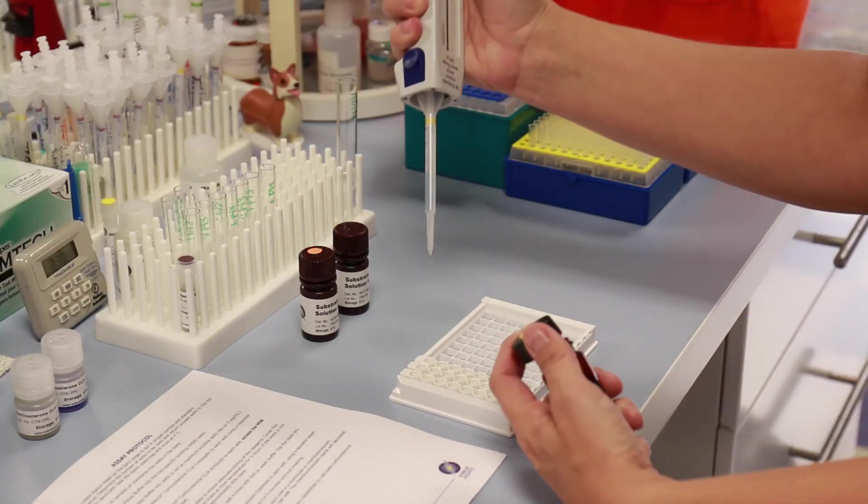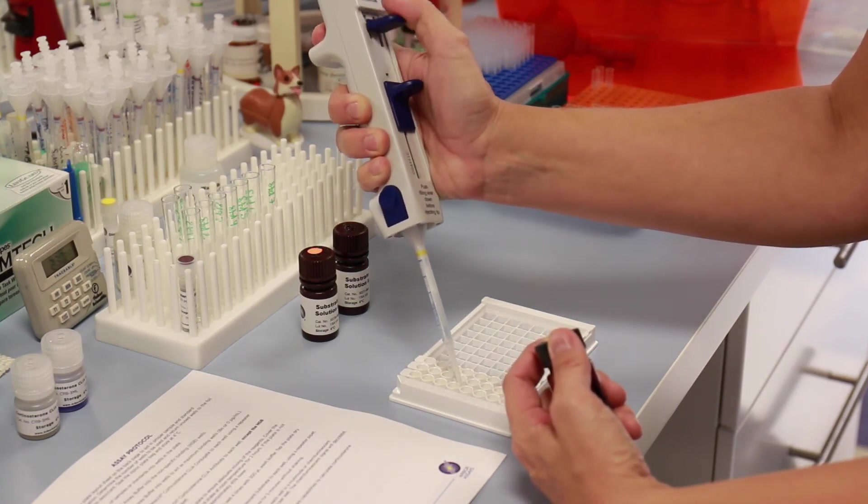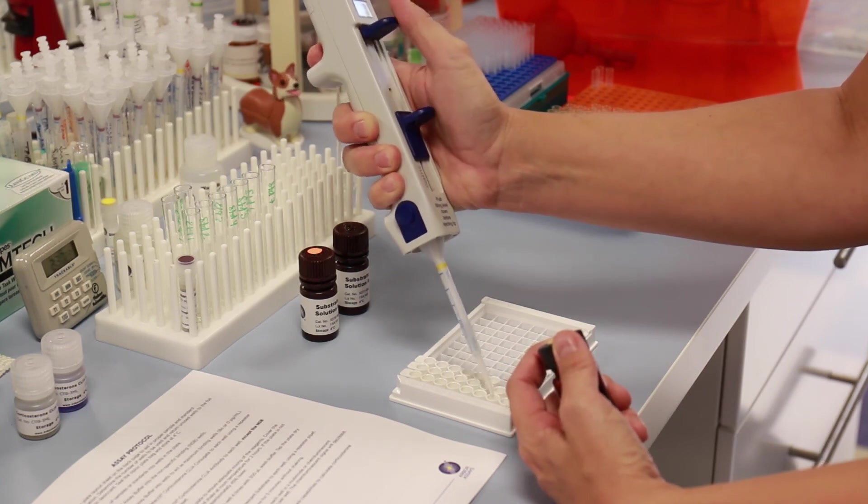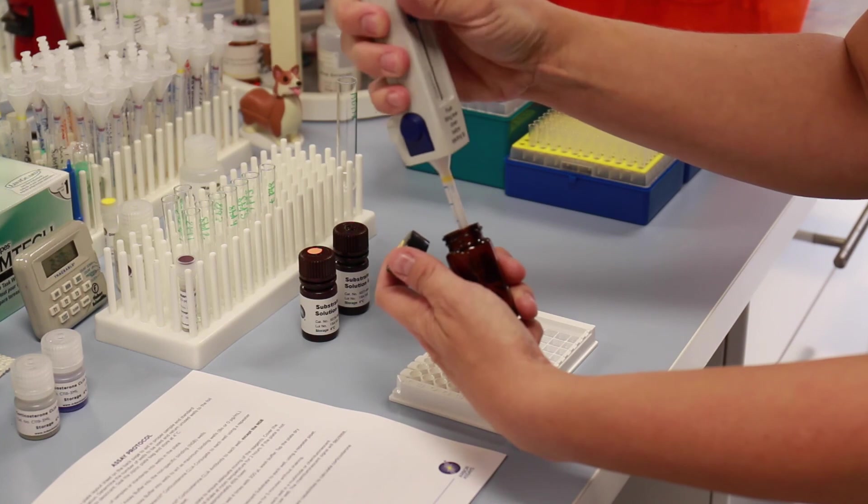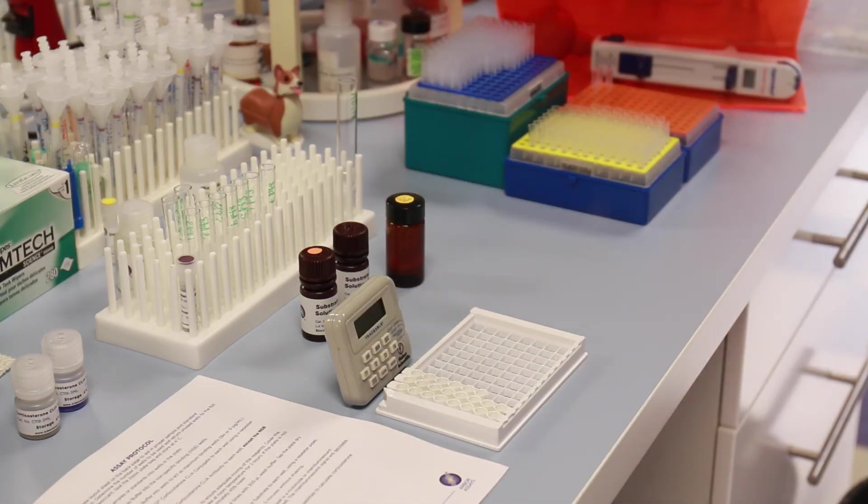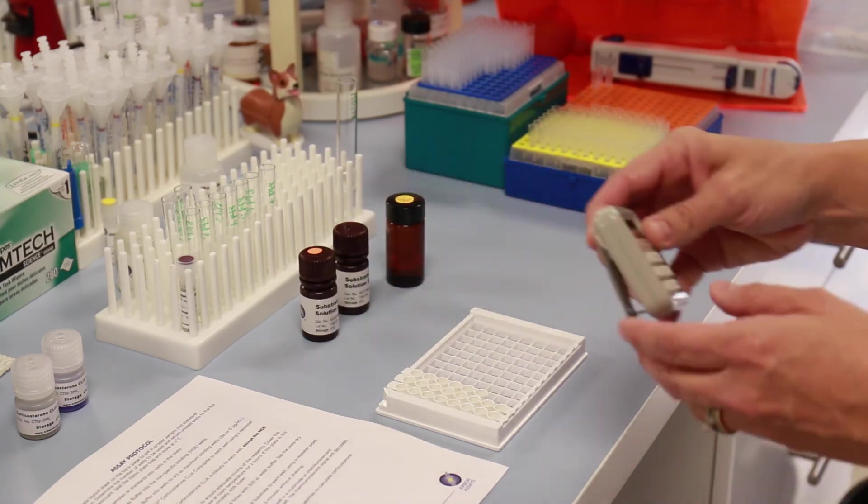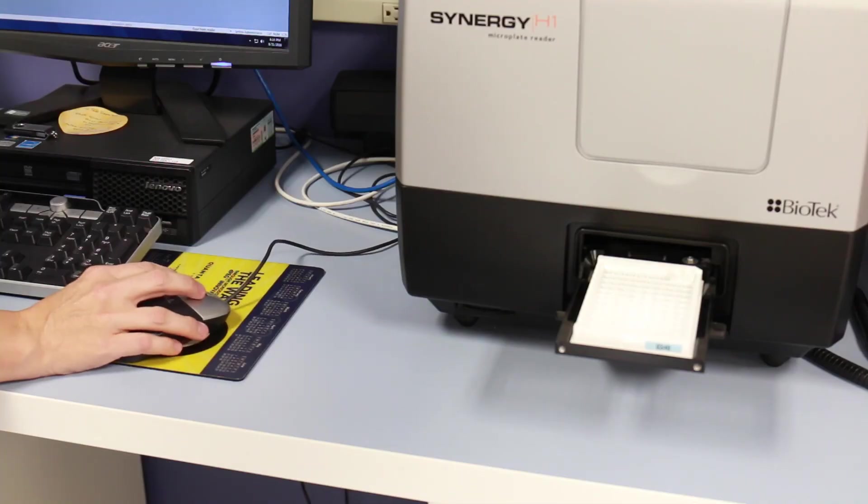Add the substrate mixture to the wells using a repeater pipette designated for the mixture. Allow the substrate to incubate for five minutes prior to reading in the luminometer. The substrate incubation can occur on the bench top. Insert the plate into the luminometer and read each well for 100 milliseconds.